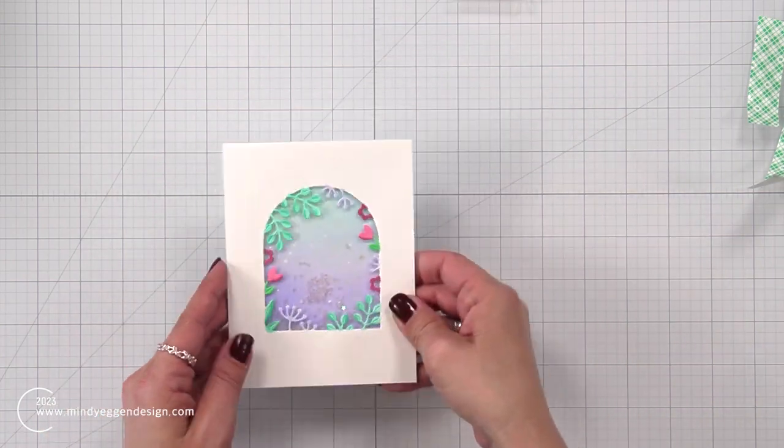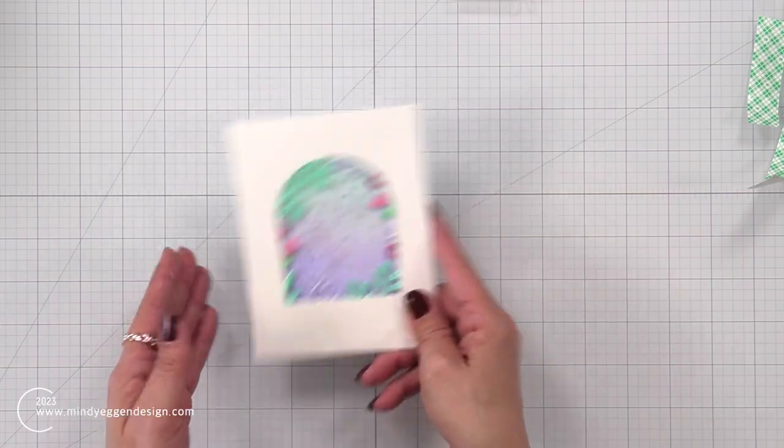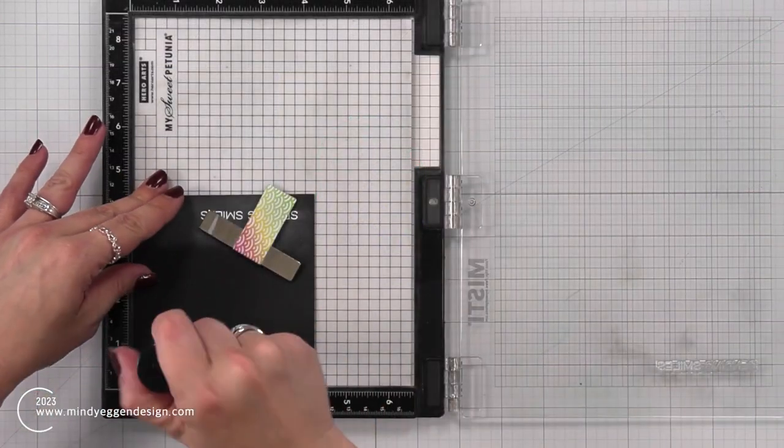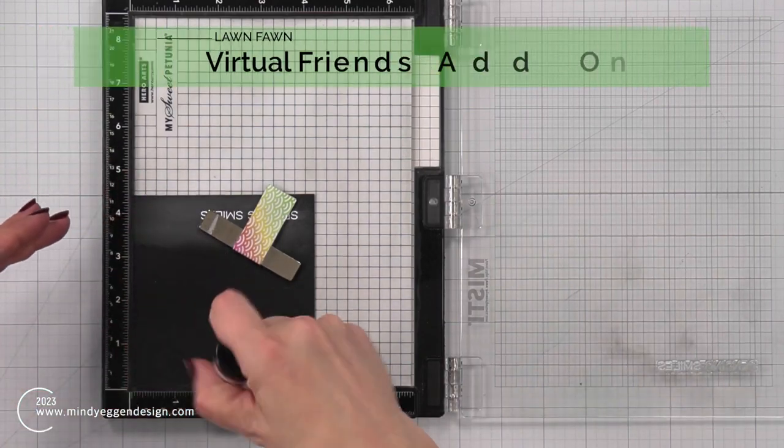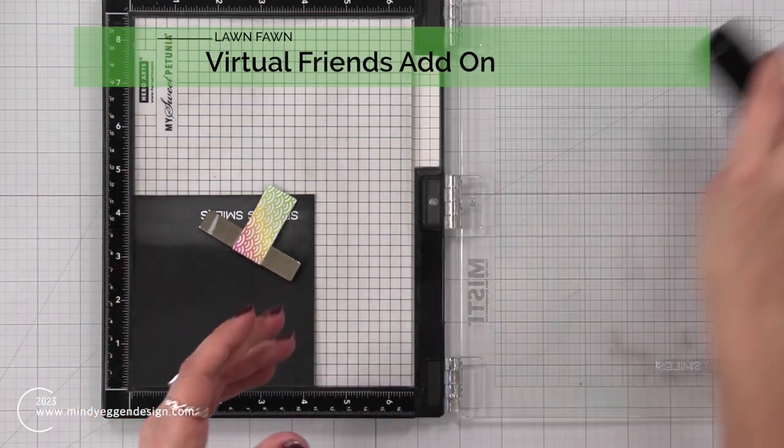So once I pick this up and shake it, you can see there's not a ton of movement in there, but I'm okay with that. If you were going to be adding things like sequins and a little bit larger embellishments in there, you definitely want to double up your foam.